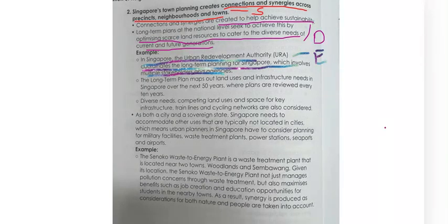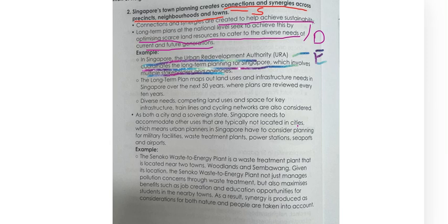So the URA helps to coordinate long-term planning which involves multiple stakeholders over the next 50 years. You can combine examples if you want. Your SDE is there. Now we need to look for our effect — is there any effect? From here, you can see there's not much effect, so we can leave it and do our SDE first.